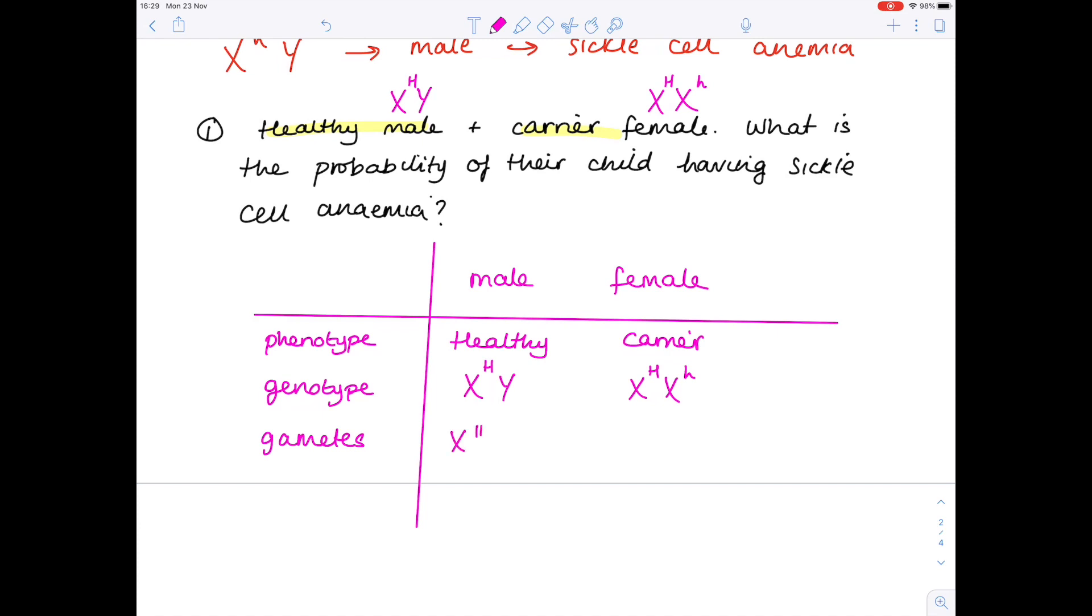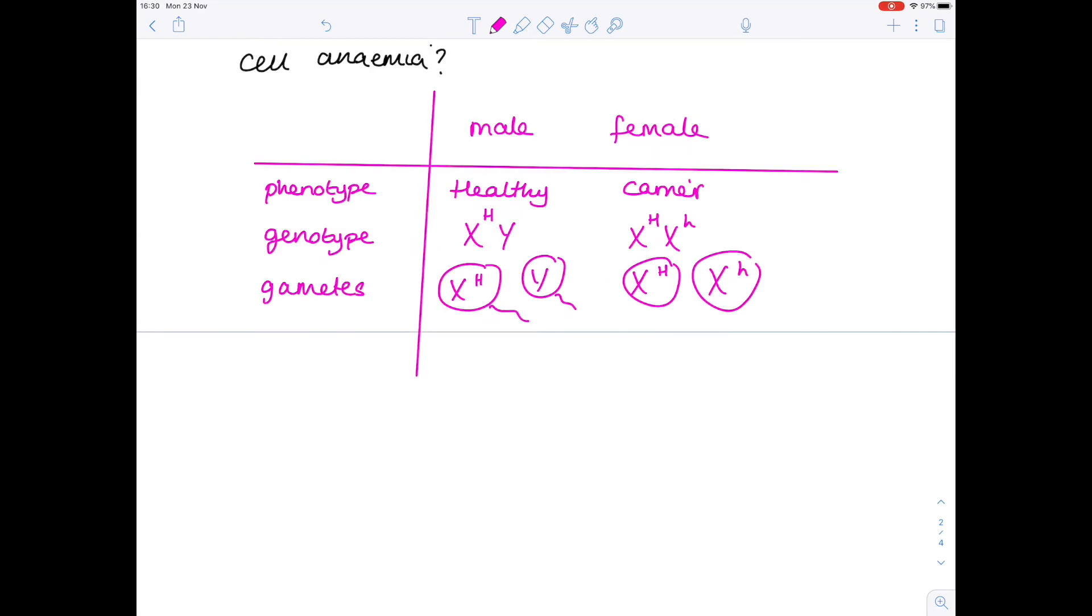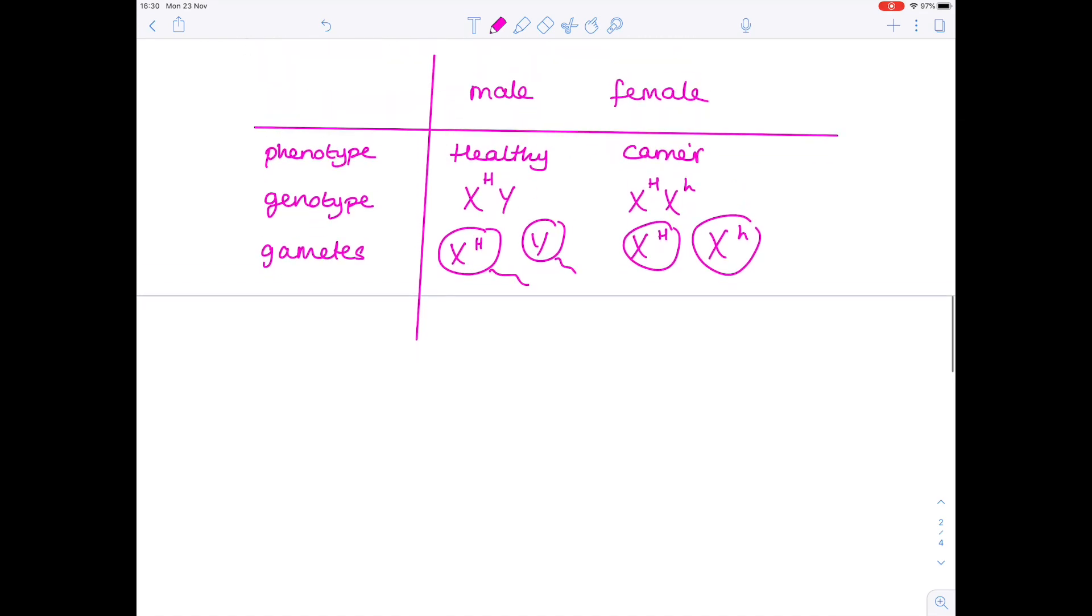Remember those are the sex cells, so some of those sperm will have the X^H. They'll be female and they'll be healthy sperm, and some will have that Y chromosome, which means that they'll be male sperm. The female, some of her eggs will be healthy and some will carry that gene for anemia. And if you don't like what I'm doing here, you must watch my other videos on Punnett squares because this is assuming that you're okay with GCSE level Punnett square theory.